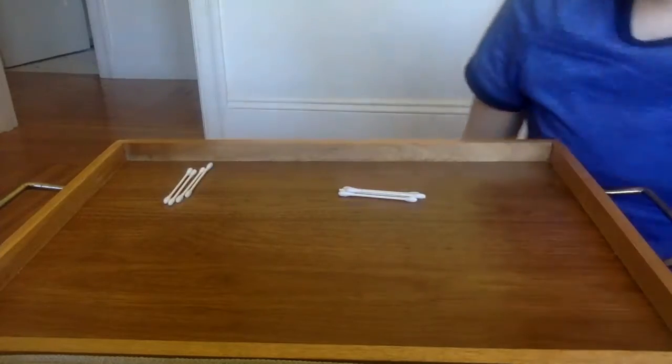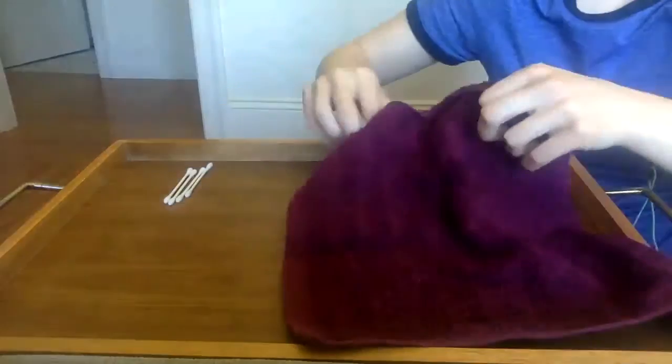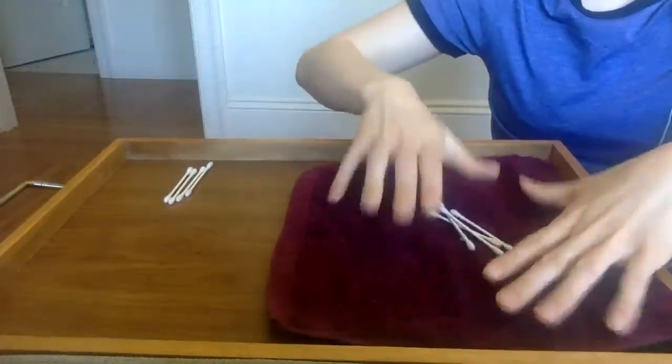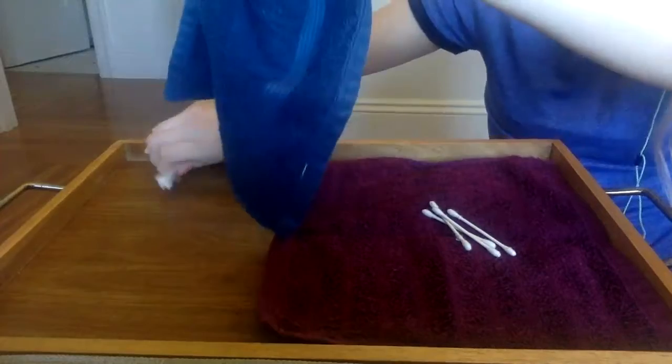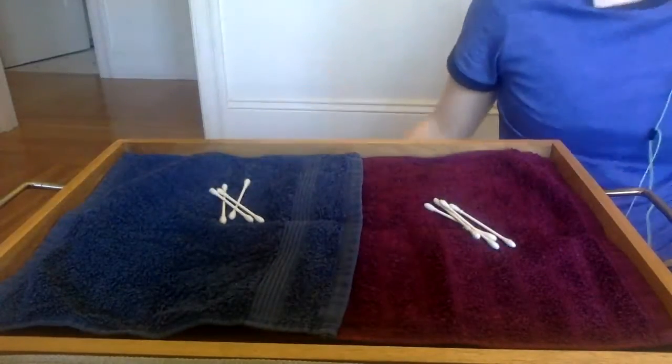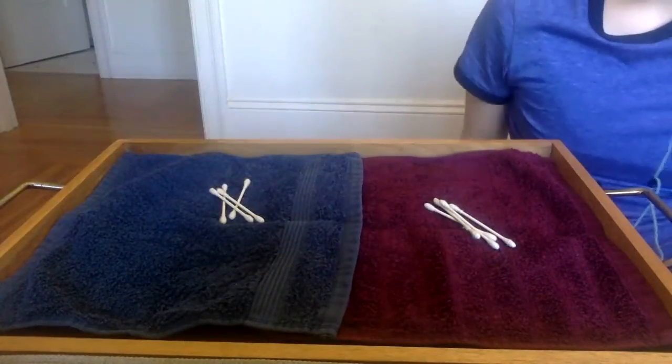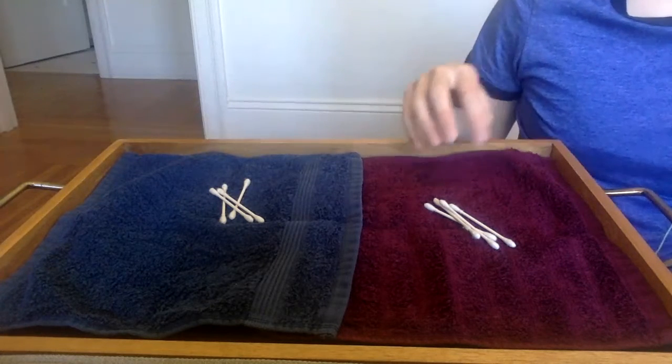To demonstrate this, I'm going to use two washcloths. This washcloth is my work area, and these are my Q-tips. This is the other person's work area, and these are their Q-tips. Having your defined work area also makes it clear whose items belong to who for the activity.